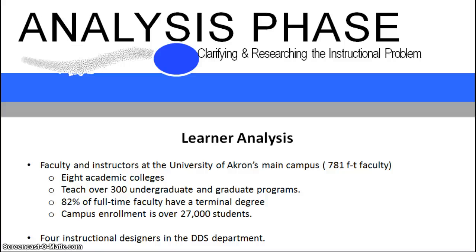Our audience, or group of learners, encompasses full-time faculty and part-time instructors at the University of Akron. Currently, 781 full-time faculty are employed at the University's main campus. These faculty work in eight academic colleges and teach over 300 undergraduate and graduate programs to a campus enrollment of over 27,000 students. 82% of our full-time faculty have a terminal degree, and our base of learners are exclusively University of Akron faculty and instructors.